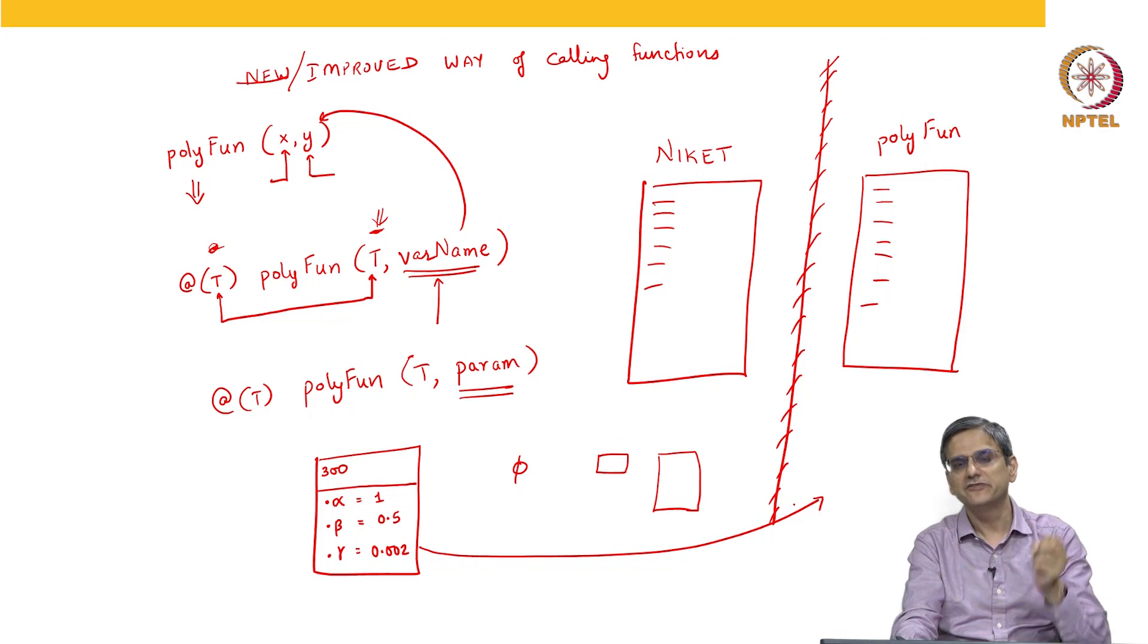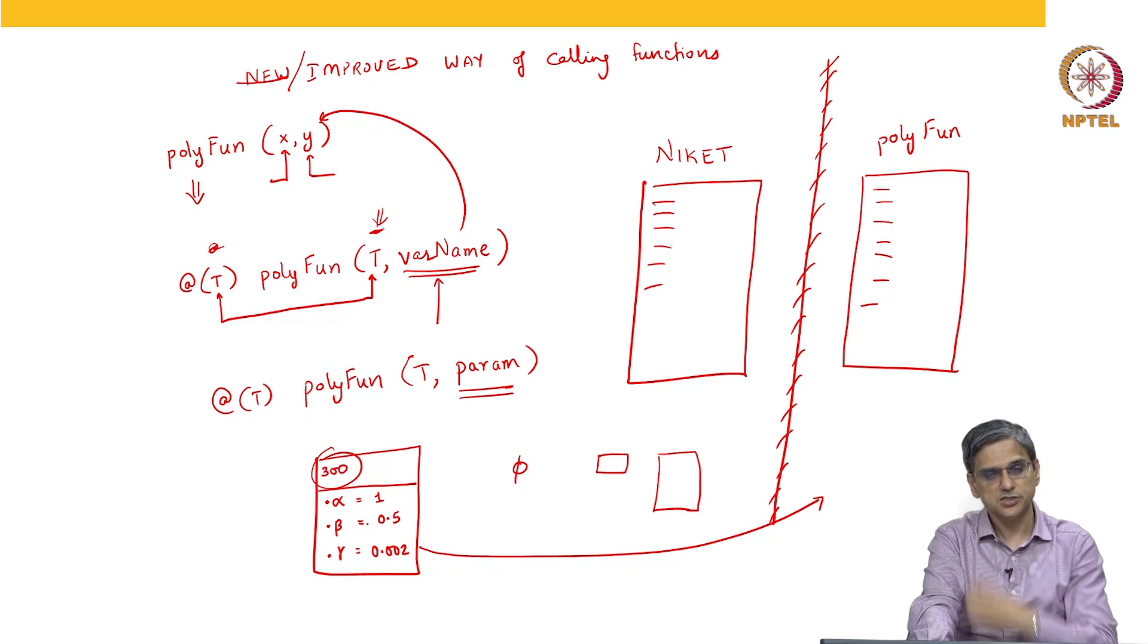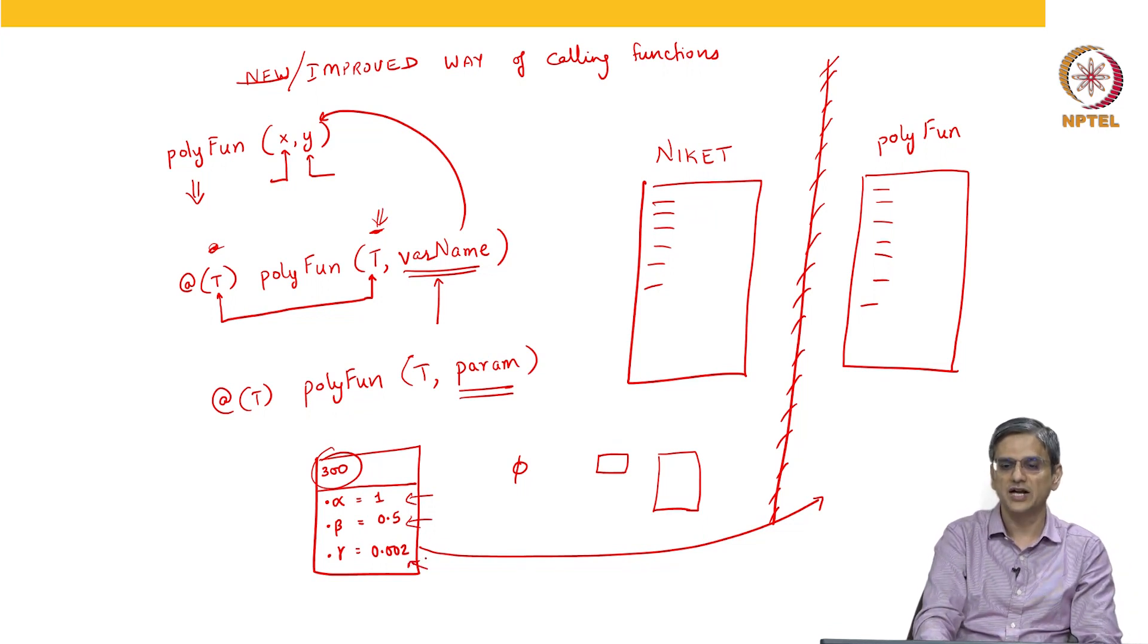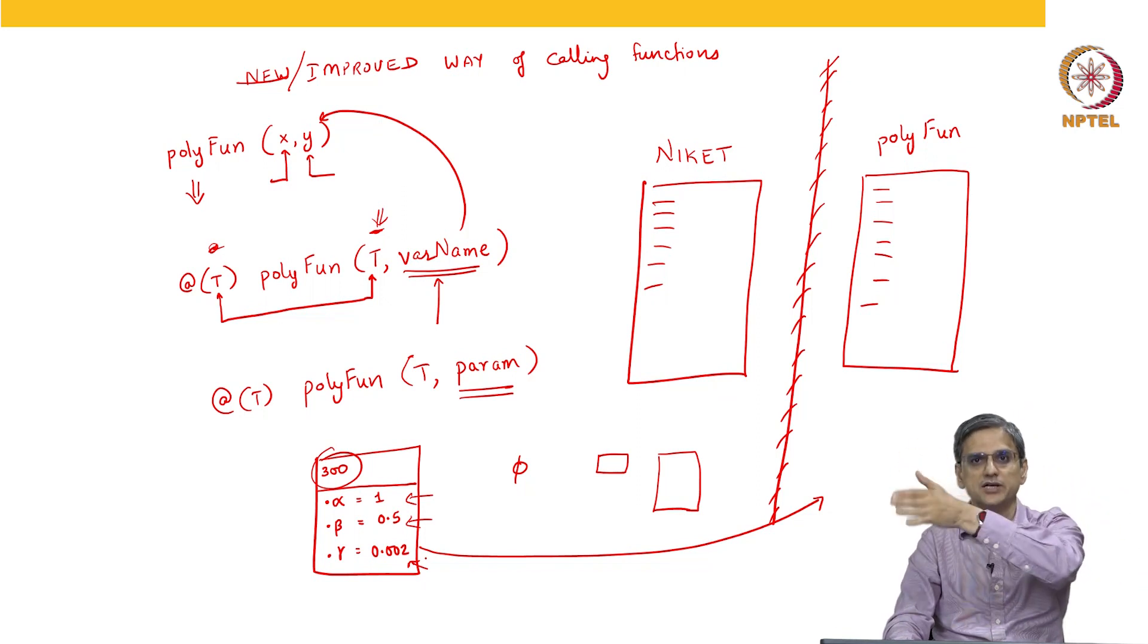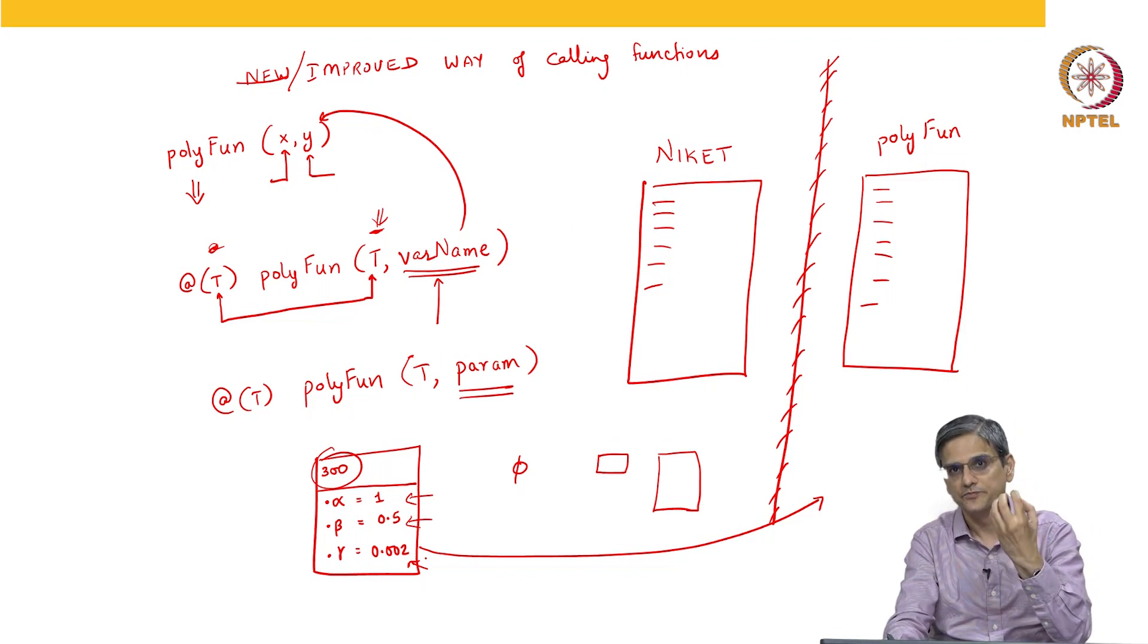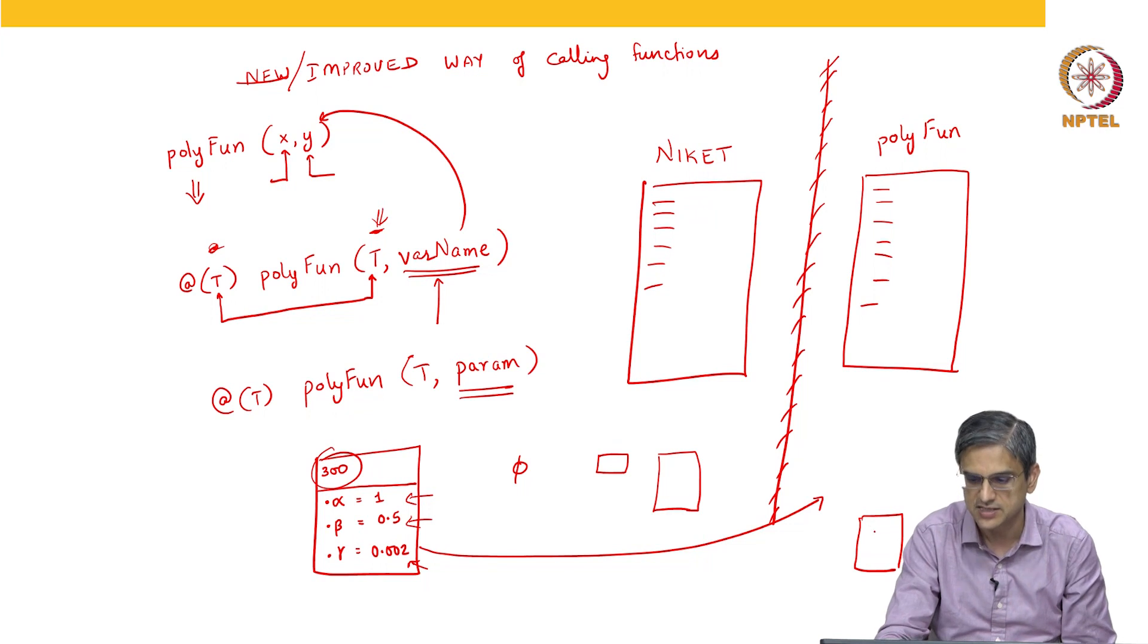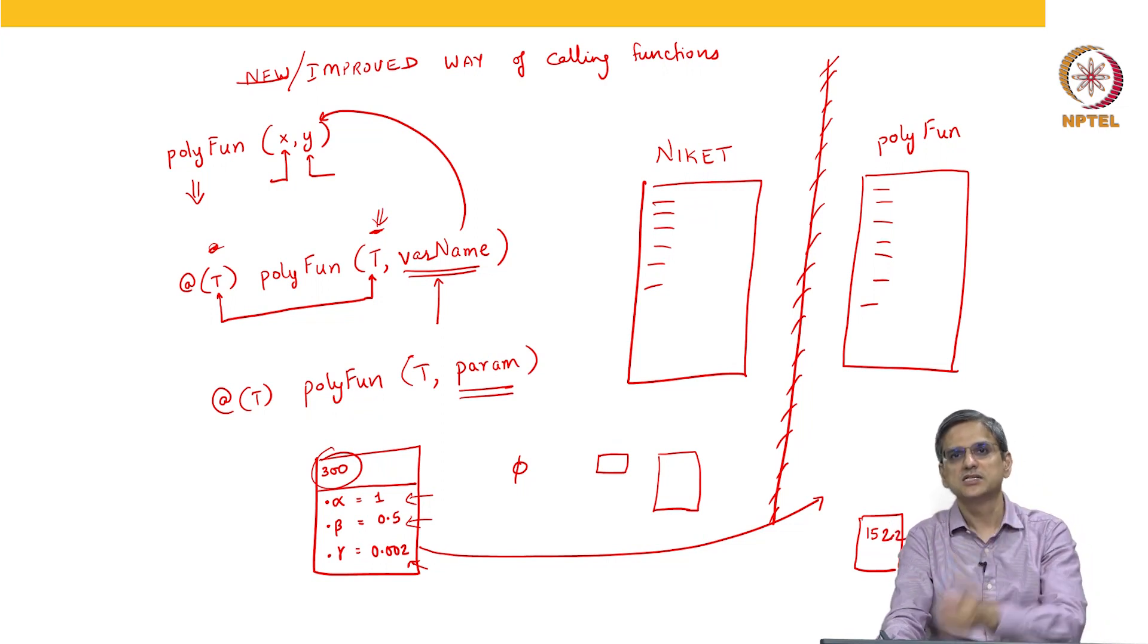Now what does polyfun do? Wherever t is being used, polyfun is going to use the number 300 in place of that t, wherever the parameter structure is used, it will use these three values as alpha, beta and gamma fields of that parameter. It gets these instructions where it does alpha plus beta into t plus gamma into t square. It has no idea what alpha is, no idea what beta is, no idea what gamma is, no idea what t is, it just follows these instructions blindly. Once it follows these instructions, it gets a particular value. That value, the polyfun writes it in another chit. In a different chit, polyfun writes that value of phi and let us say that value of phi turns out to be 152.2. It takes this and gives this chit back to me.